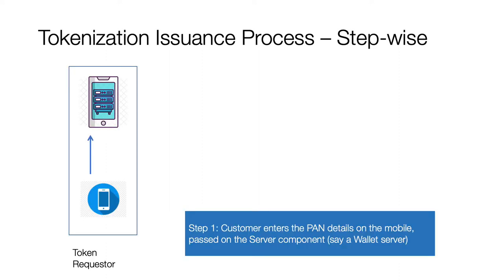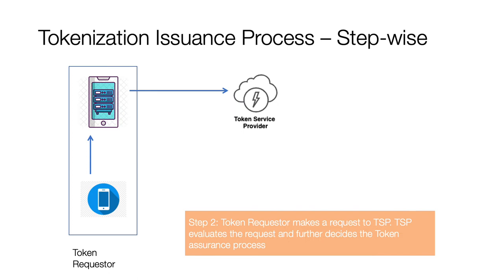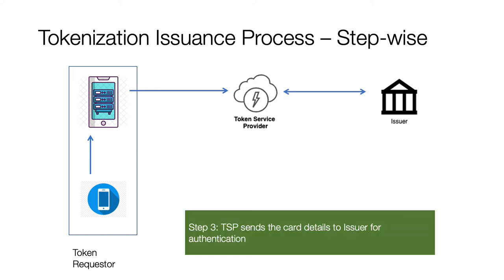Going step by step in more detail: the first step is where the customer enters the PAN details on the mobile or any other end device, which is passed on to the corresponding server component — both encompassing the token requester ecosystem. With these details, the wallet server checks if the card is eligible with the token service provider — that is the card eligibility process. Once valid, it proceeds with the token assurance process: the TSP sends the card details — card number, expiry date, CVC — to the issuer for authentication.